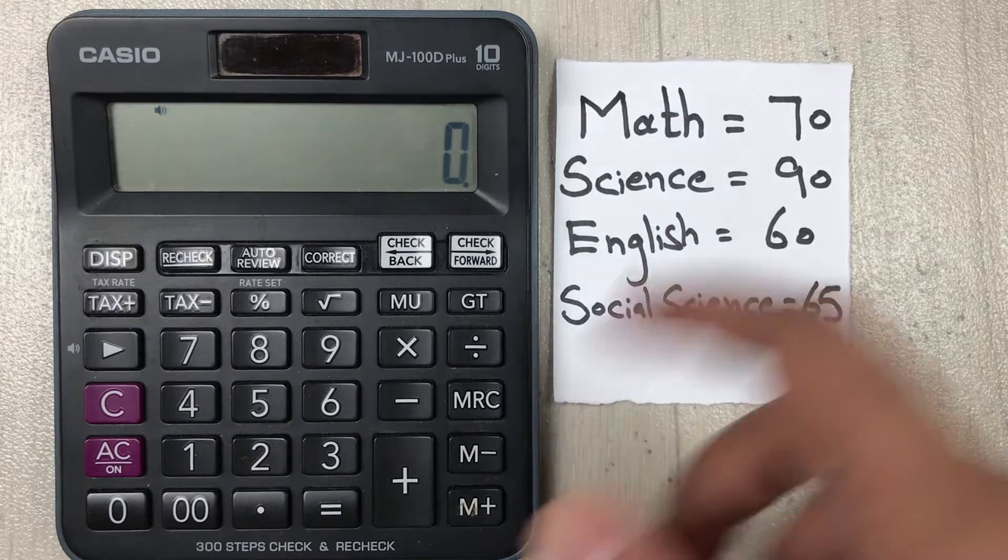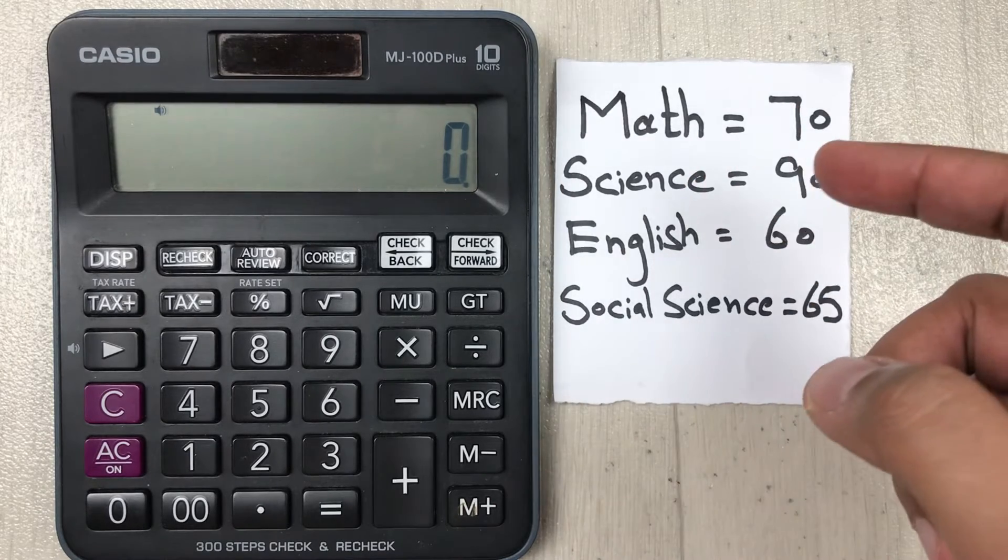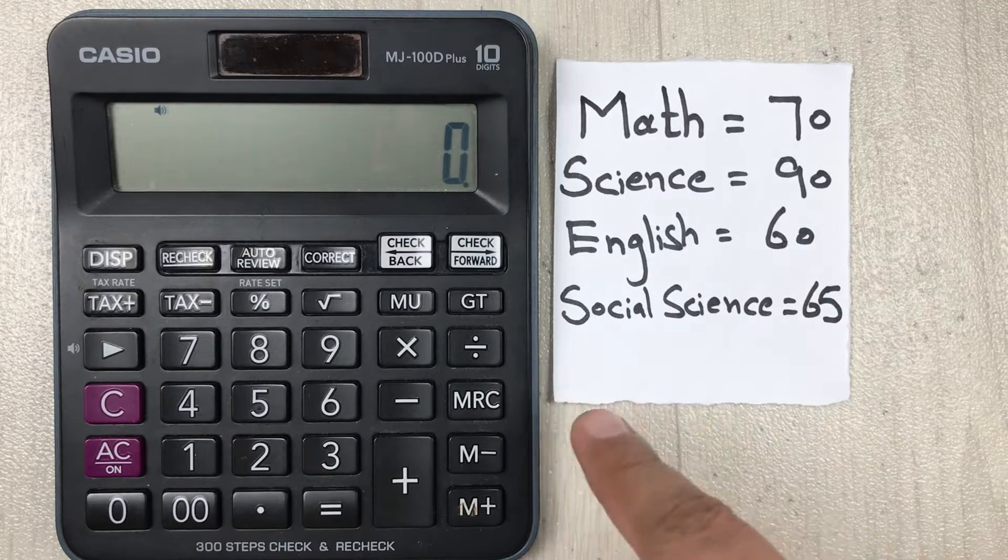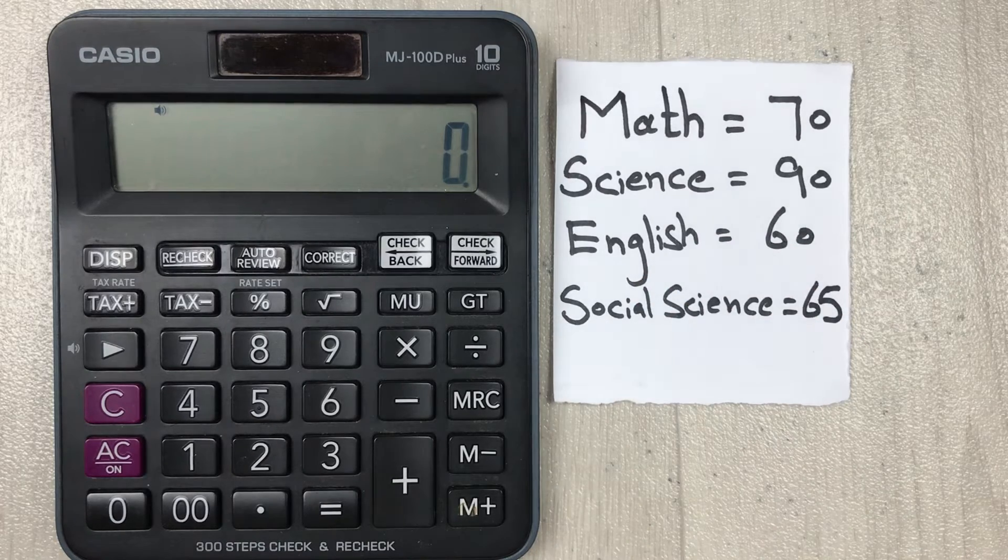You can see over here we have Math 70, Science 90, English 60, Social Sciences 65.